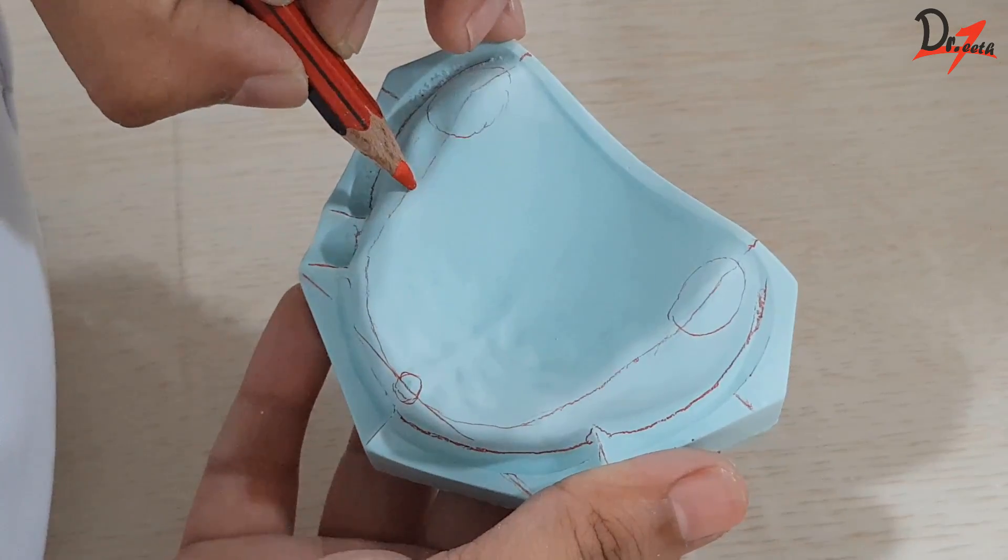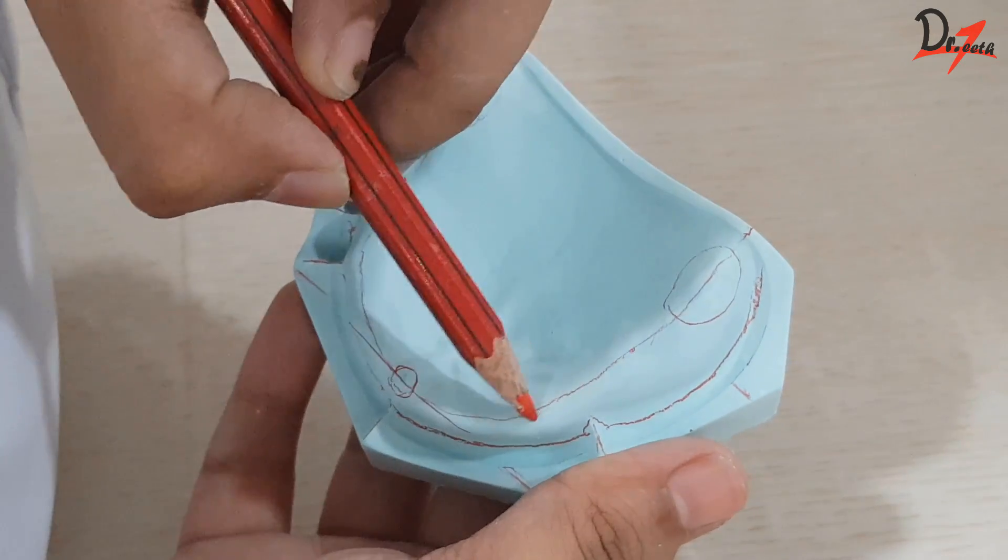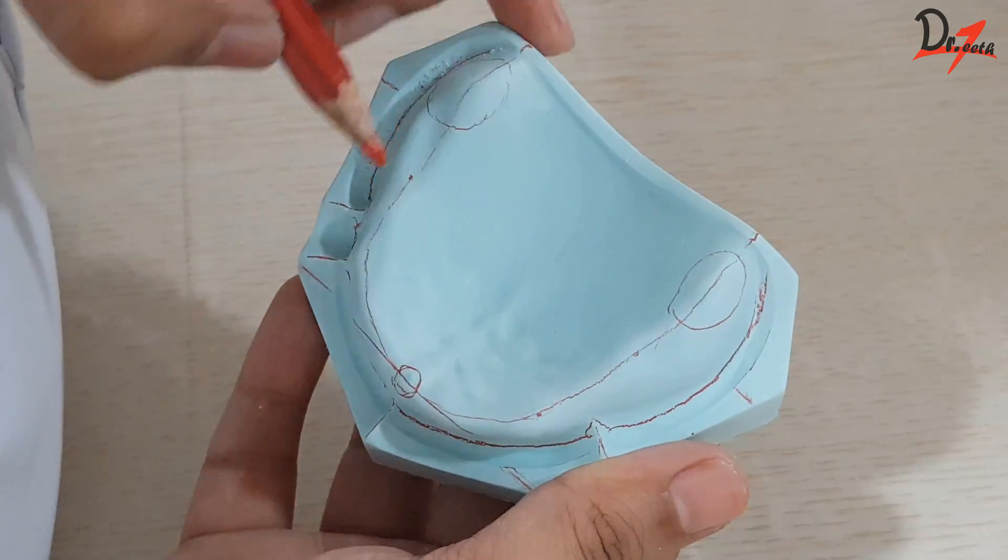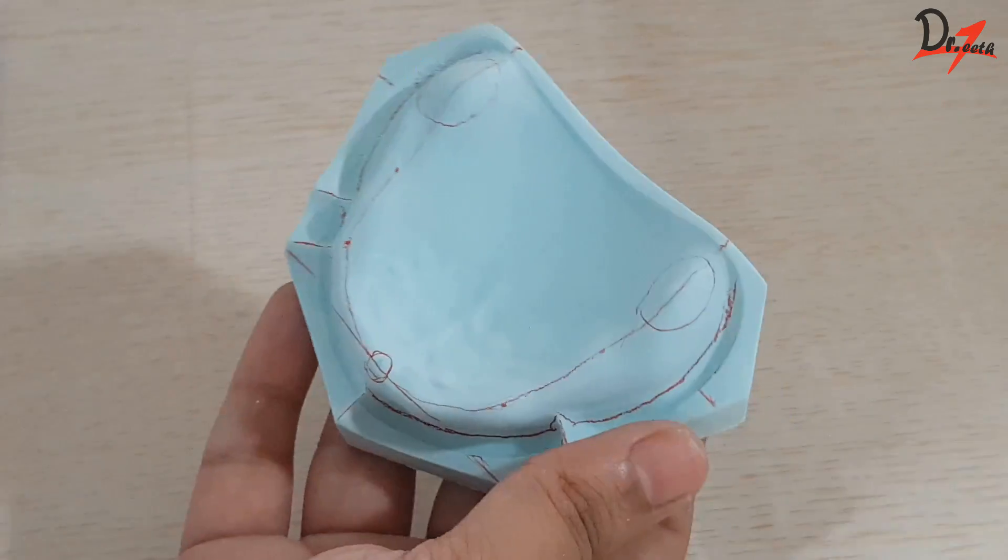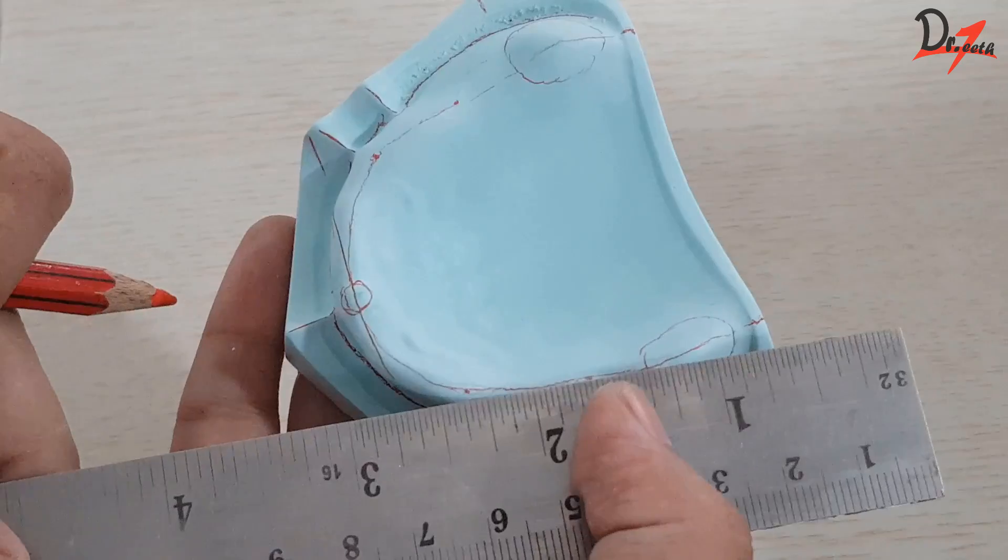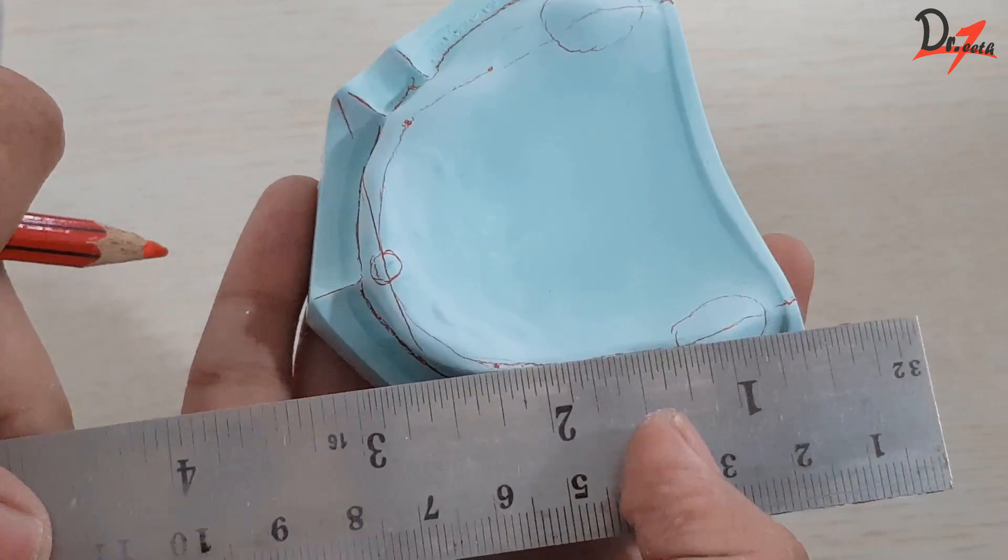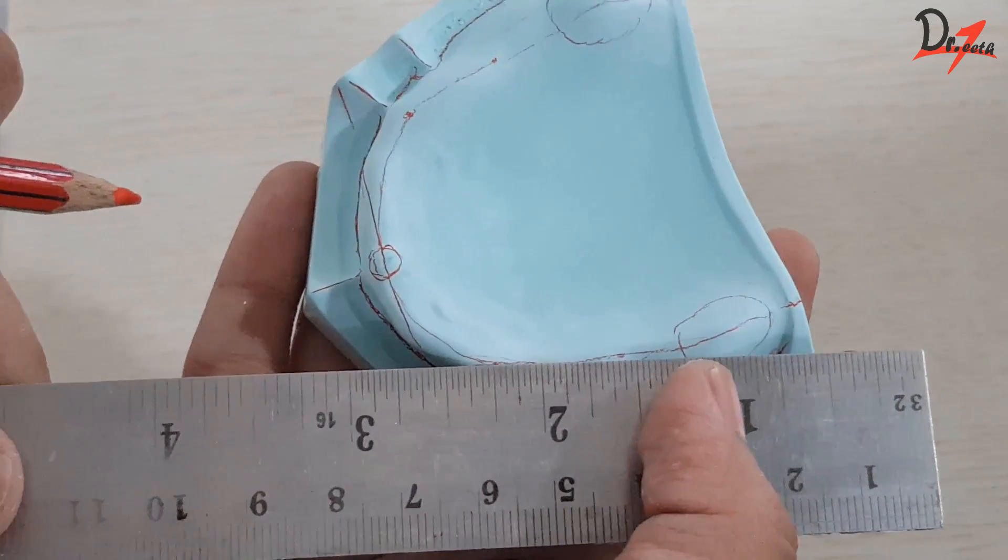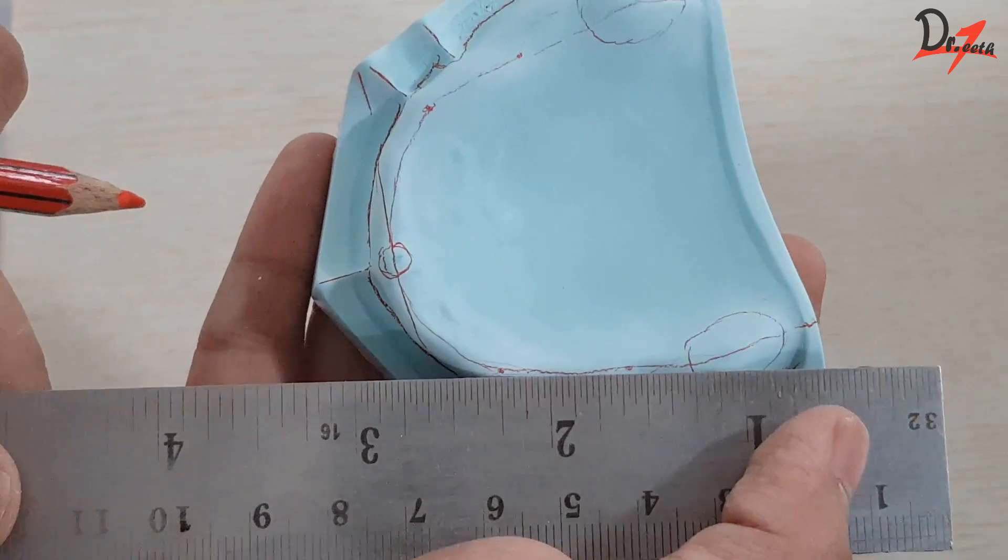So take a point 4mm ahead of the anterior end of the maxillary tuberosity. And from there, the area where this straight line starts to get curved should be the other point. Now we got a straight line.